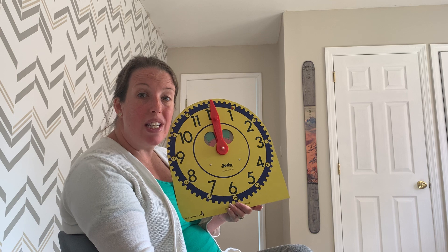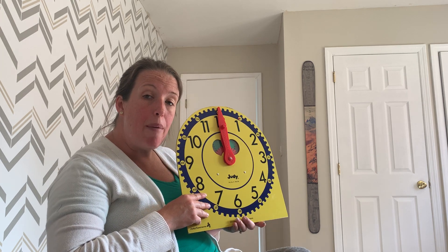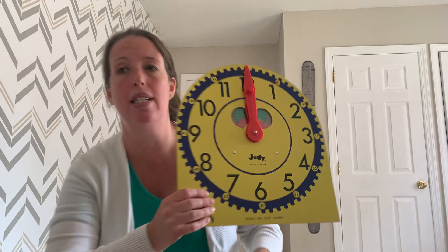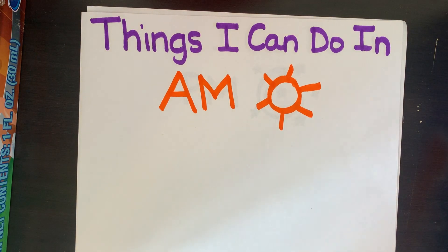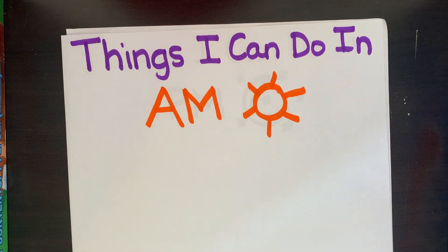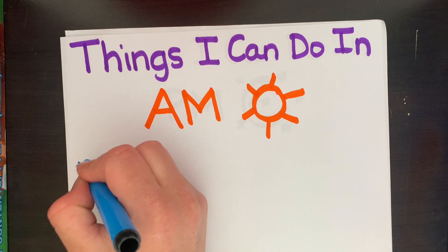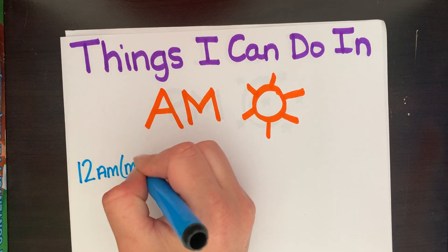Okay, so I want to take a look — we're going to label some clocks and think about some things we can do in the a.m. and some things we can do in the p.m., and what time that would be. So let's start with things I can do in the a.m., starting in the early, early mornings. What I always think of is 12 a.m., which is the same as 12 midnight.